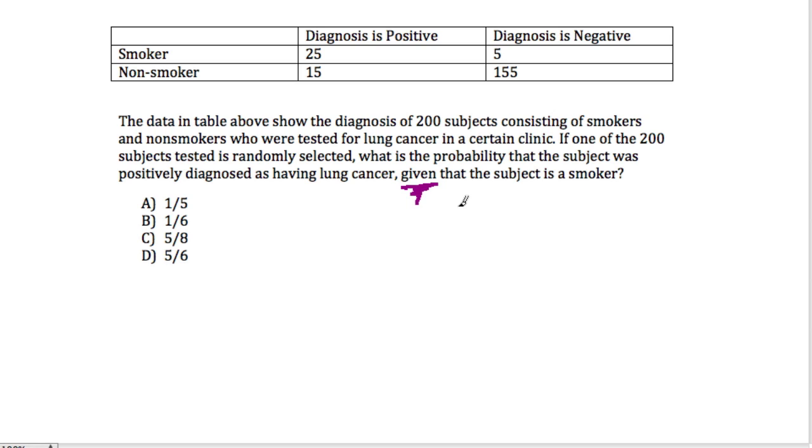And this is a little misleading in the way they phrase it. First, they say if one of the 200 subjects tested is randomly selected, which makes you think that the total area or the total number of people you're looking at is all 200. You're not. They're saying later that it's given that the subject is a smoker. So if they're a smoker, this line right here, you know they're a smoker. So how many people is that? Well, there are 30 smokers. And we know that. So really, we're looking at the cases where there are smokers.